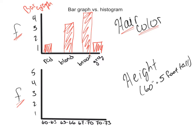You see how there are gaps or spaces between each one of these bars, these columns? That indicates discrete variables. Discrete variables just means you can't keep dividing it — it's just names or categories. So I can have red hair or I can have brown hair, but I can't really have brown-red hair.